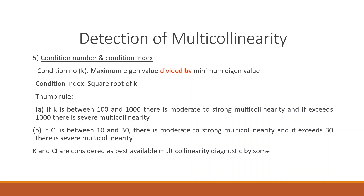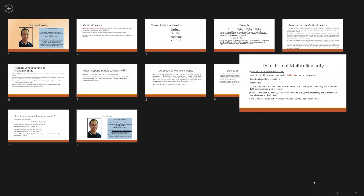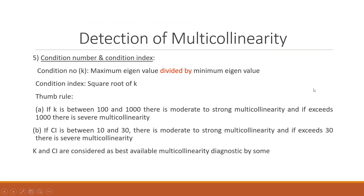There is also the condition number and condition index. The condition number k is the maximum eigenvalue divided by the minimum eigenvalue; the condition index CI is the square root of k. The rule of thumb: if k is between 100 and 1000, there is moderate to strong multicollinearity; if it exceeds 1000, there is severe multicollinearity. If the condition index is between 10 and 30, there is moderate to strong multicollinearity; if it exceeds 30, there is severe multicollinearity. k and CI are considered the best available multicollinearity diagnostics.